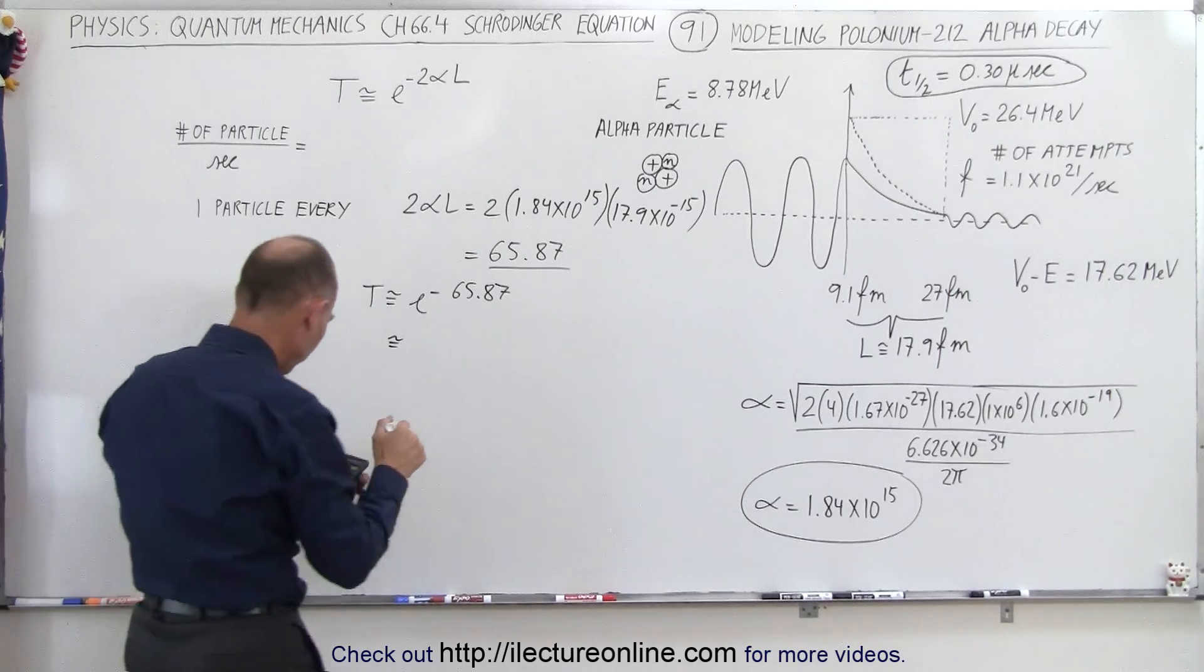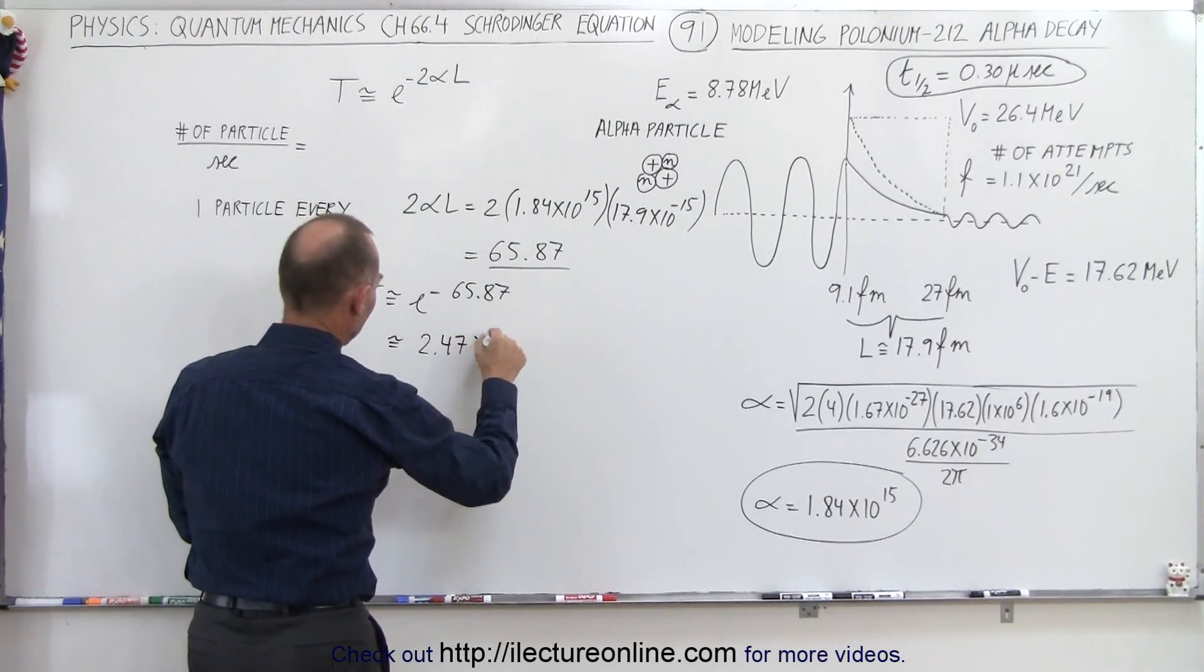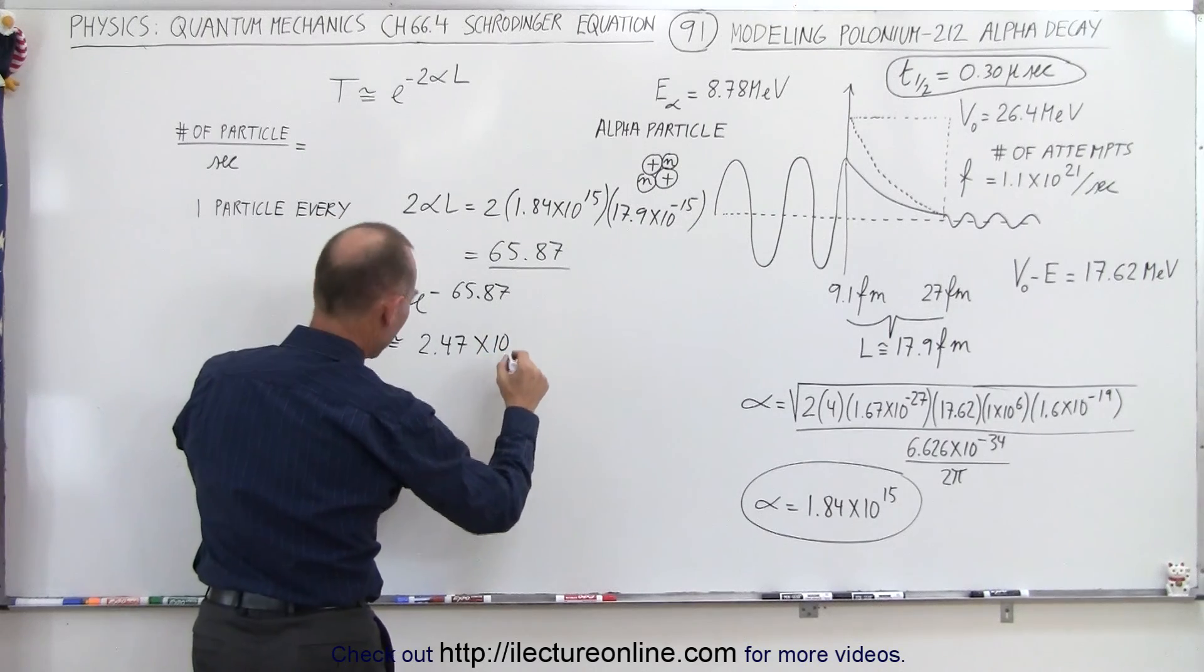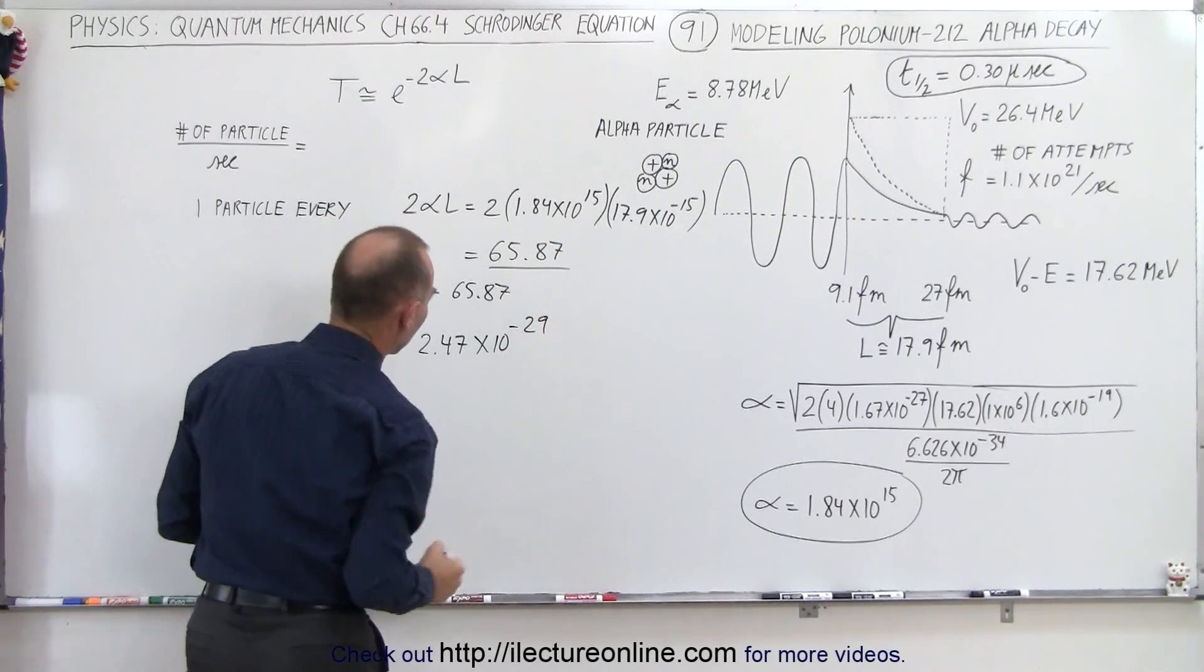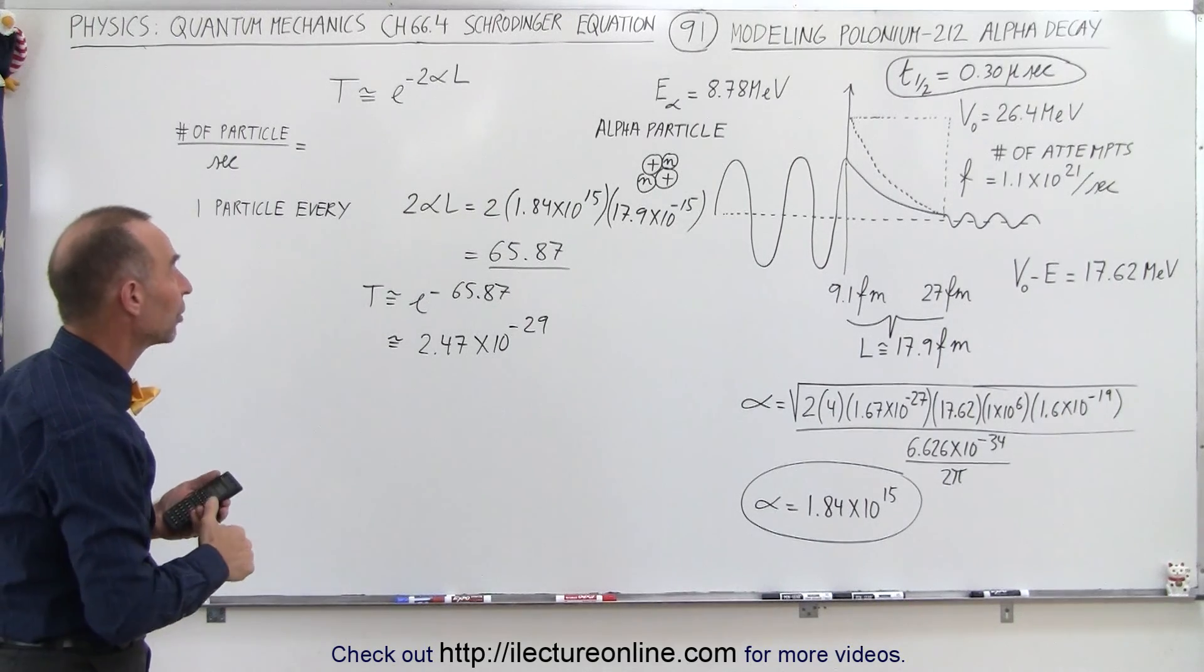It's going to be a very small probability. So put the negative in front of that and that gives us 2.47 × 10^-29. That's a very, very tiny probability of a particle making it through.